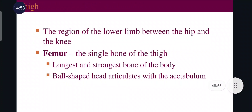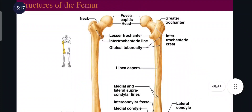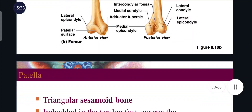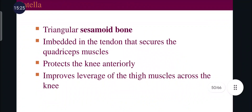The thigh is the region of the lower limb between the hip and the knee. The femur is the single bone of the thigh — the longest and strongest bone of the body. The ball-shaped head of the femur articulates with the acetabulum cavity of the pelvic girdle. The patella is a triangular sesamoid bone embedded in the tendon securing the quadriceps muscle; it protects the knee and improves leverage of the thigh muscles across the knee.